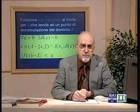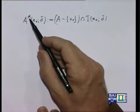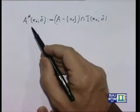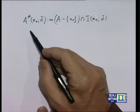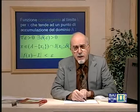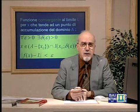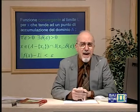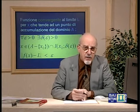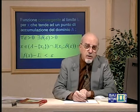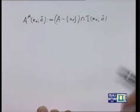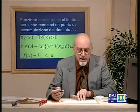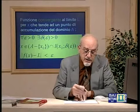Questo asterisco — non so se qualcuno ci ha fatto caso — abbiamo indicato con N* l'insieme N privato dello 0. Si indica anche con R* l'insieme R privato dello 0. In generale, la presenza di questo asterisco indica la soppressione, la sottrazione insiemistica di un elemento.